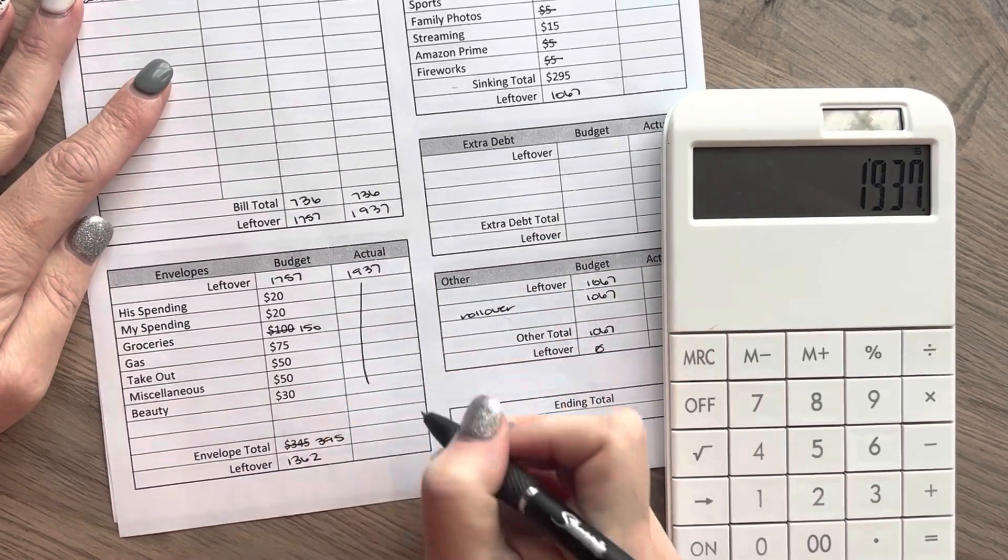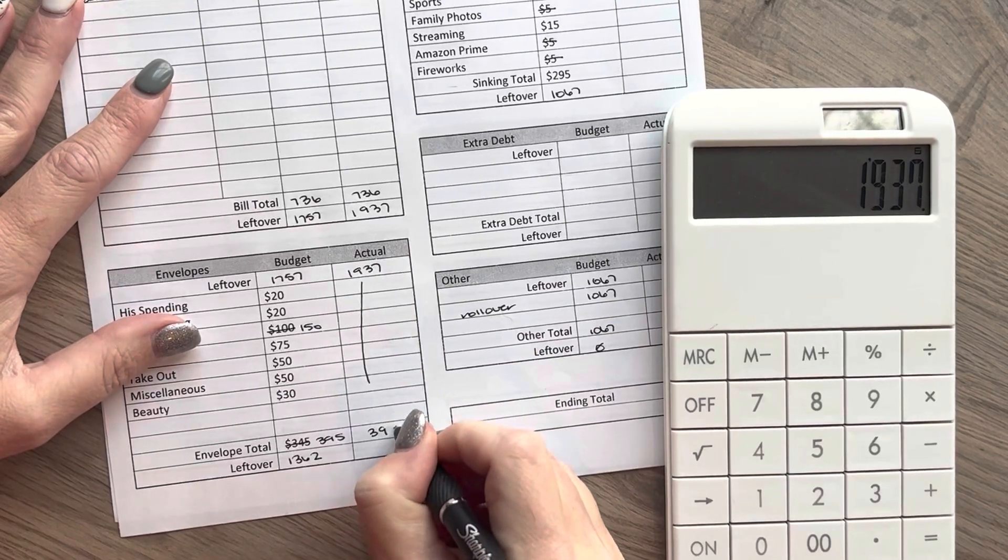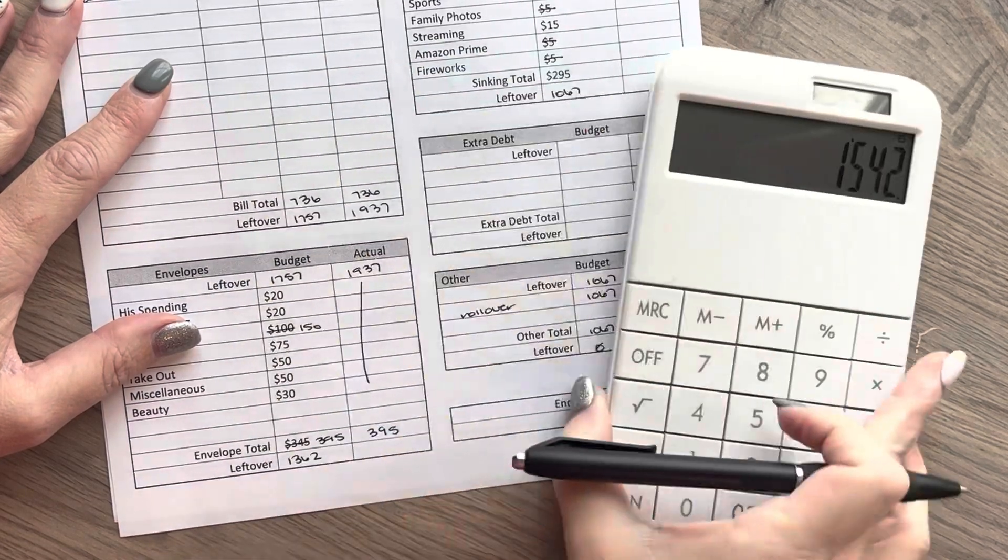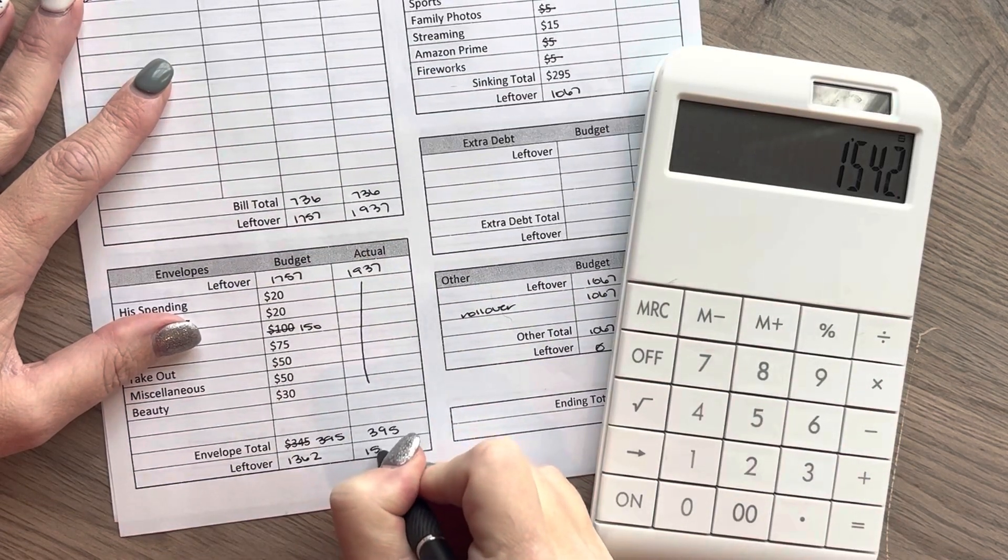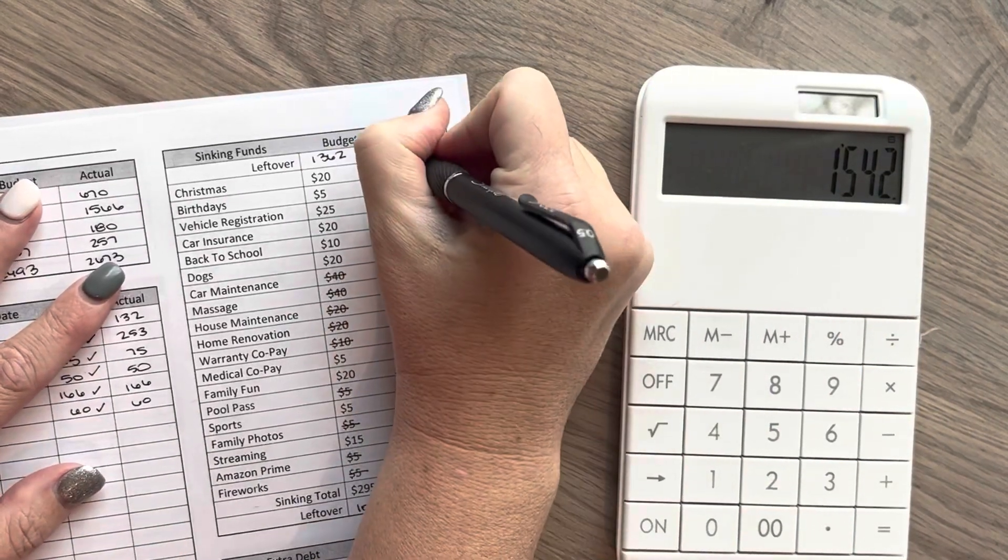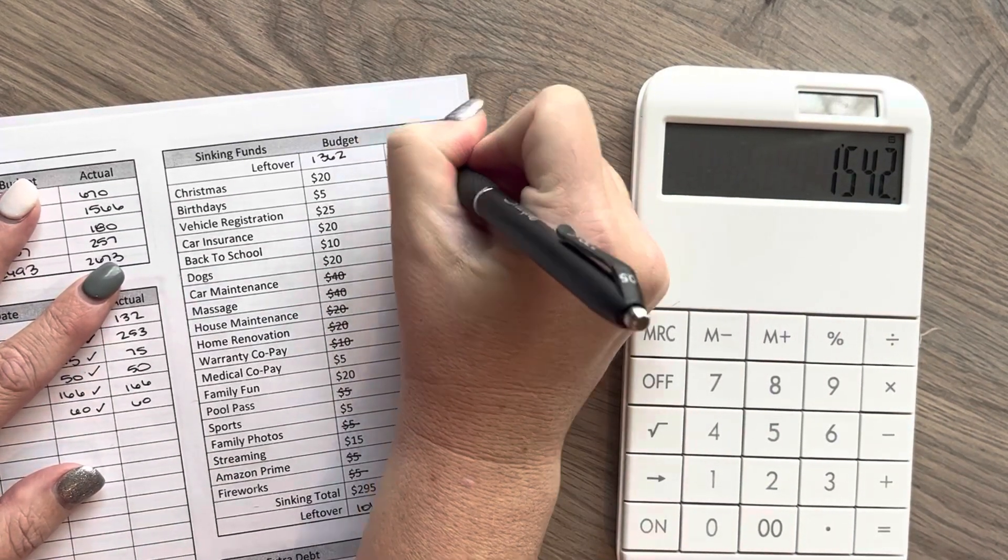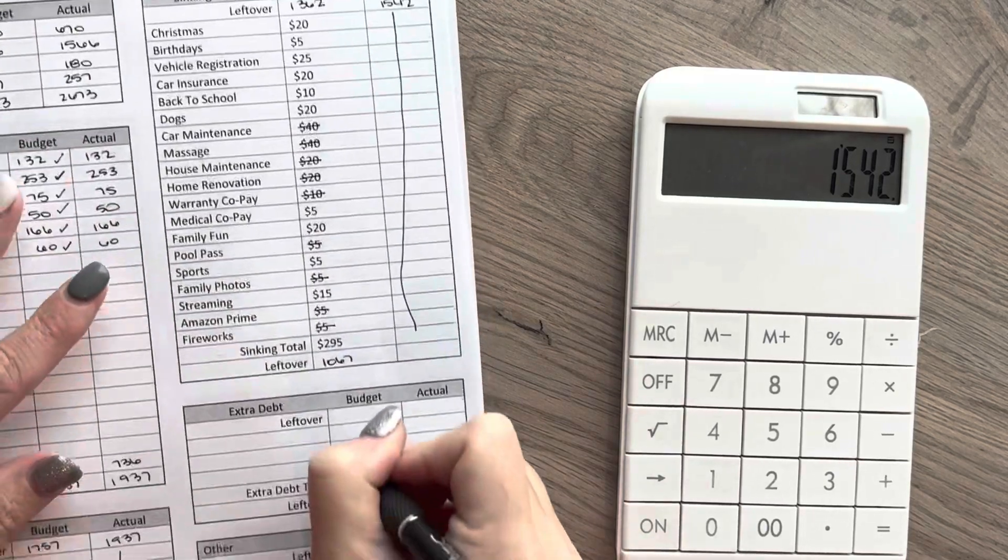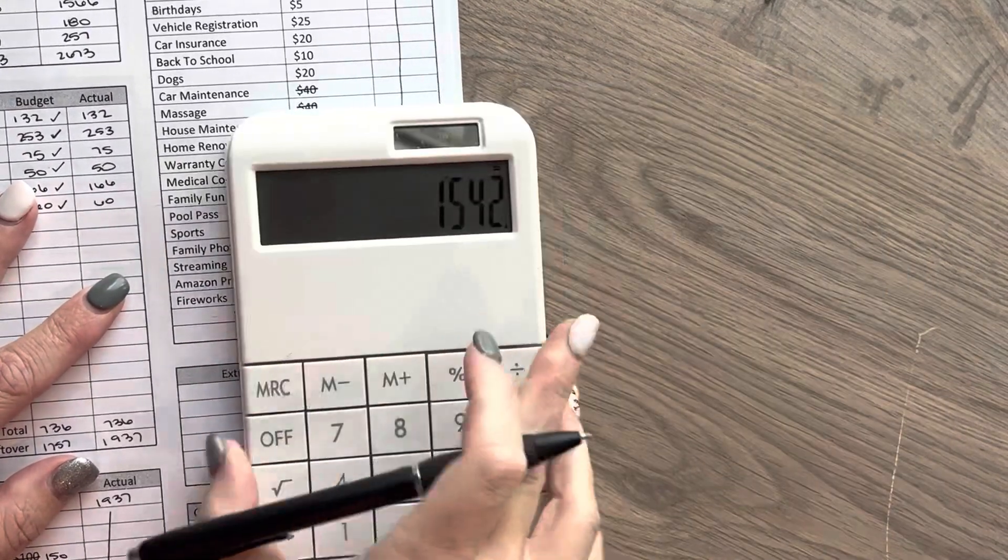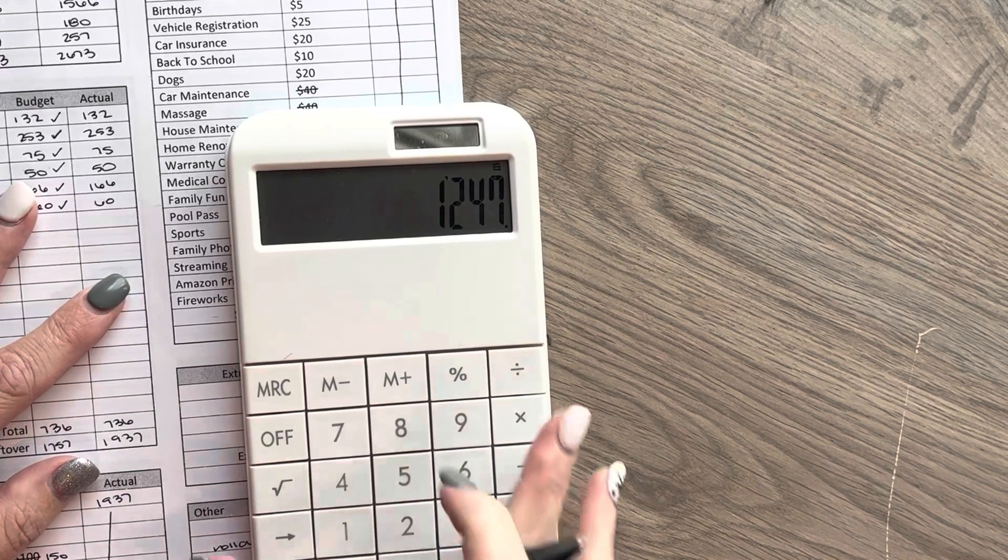And then all of these were correct for $395. So we'll subtract $395, which is $1542. And then moving up here, we did do a total of $295. So we'll subtract that, which is $1247.